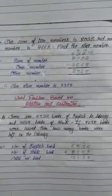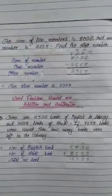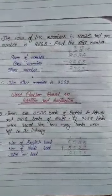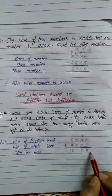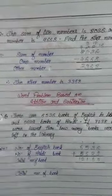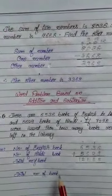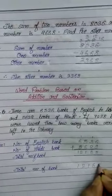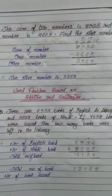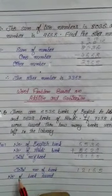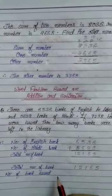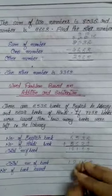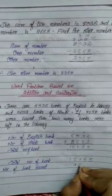Now the second step: we subtract the number of books issued from the total number of books. So, the total number of books equals 12,165. Then the second statement is: number of books issued — that is 7,298.